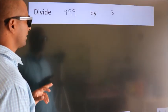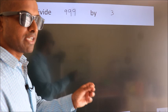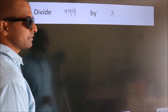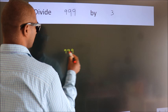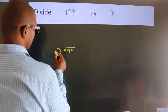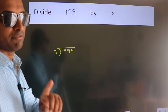Divide 999 by 3. To do this division, we should frame it in this way. 999 here, 3 here. This is your step 1.